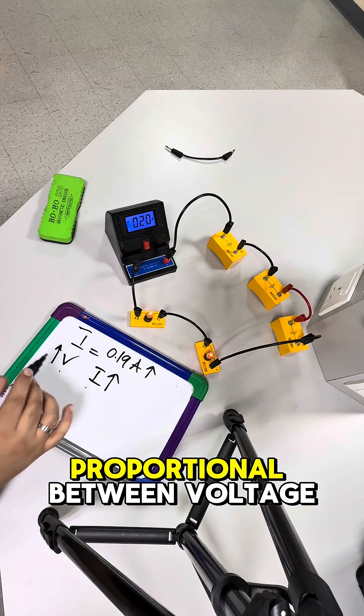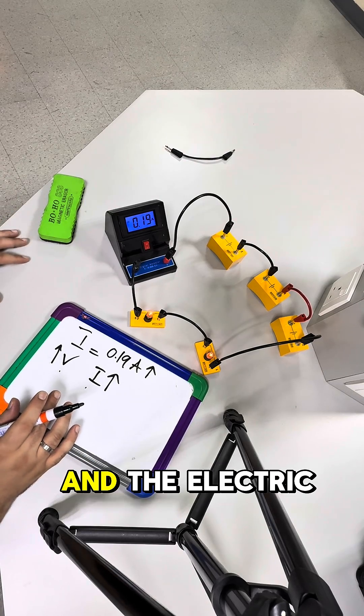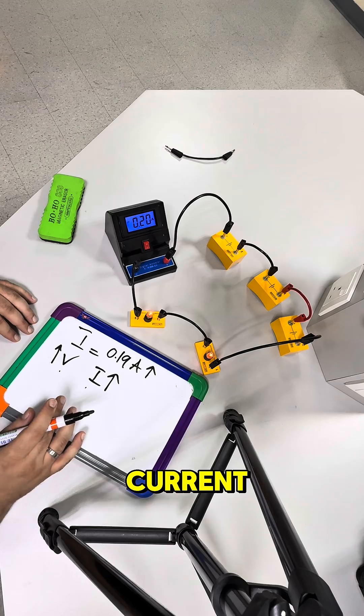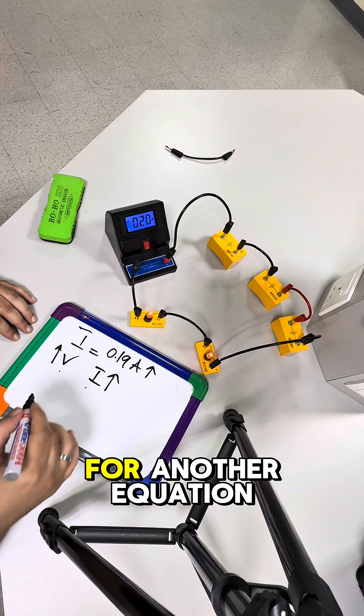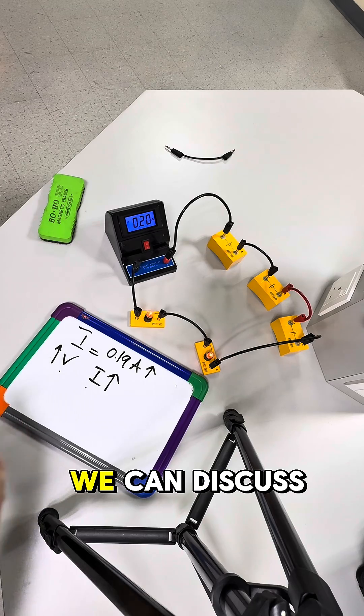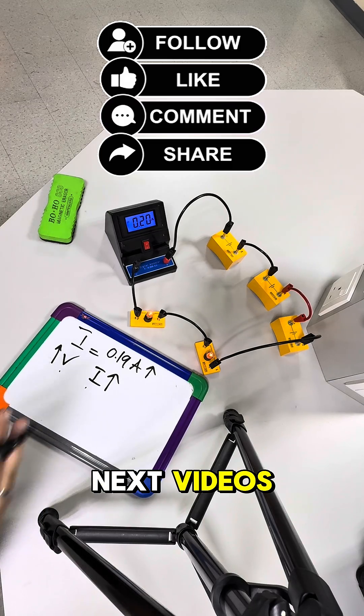There is a direct proportion between voltage and the electric current. From this point we might go for another equation, but this one we can discuss in the next videos.